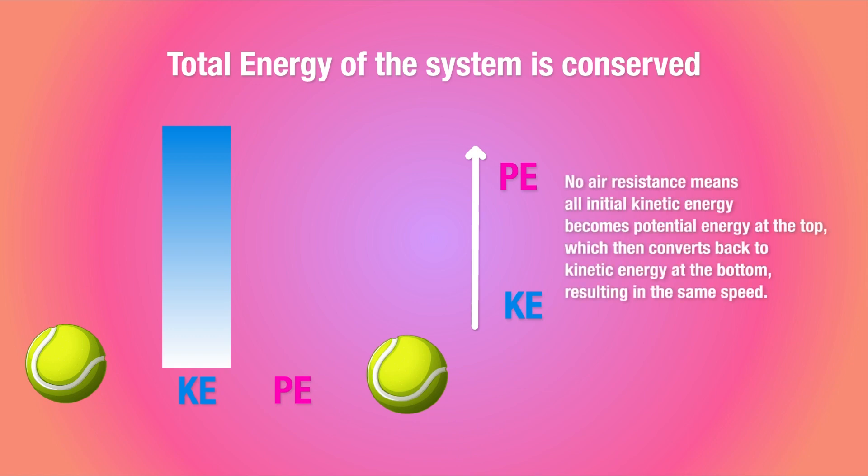As the ball starts going down, the potential energy will start converting back to kinetic energy. As the ball hits the ground, all the potential energy will have converted to kinetic energy. But all of this is under the assumption that there is no air resistance in this scenario.